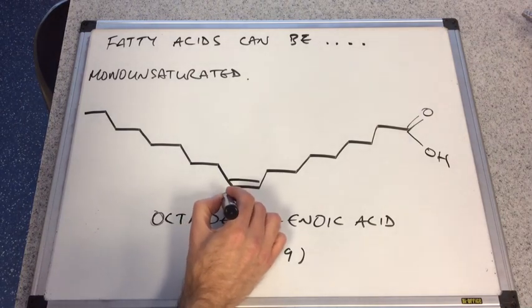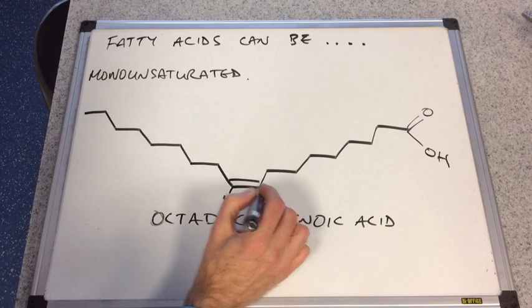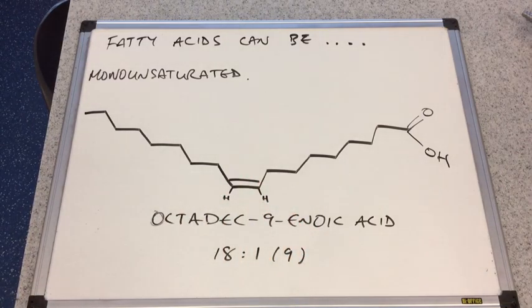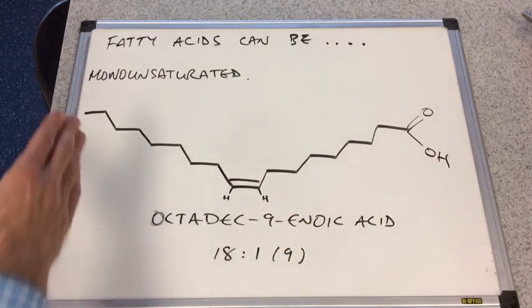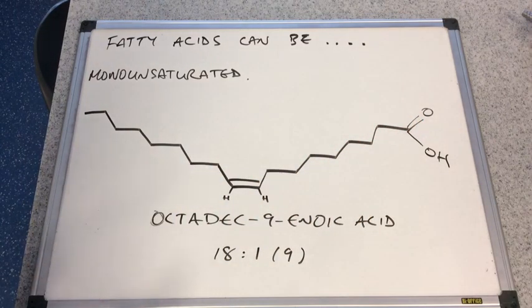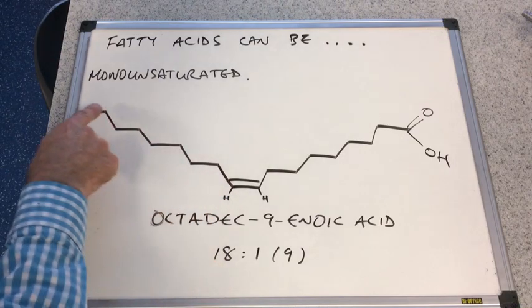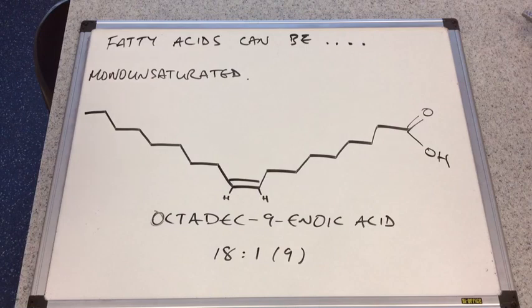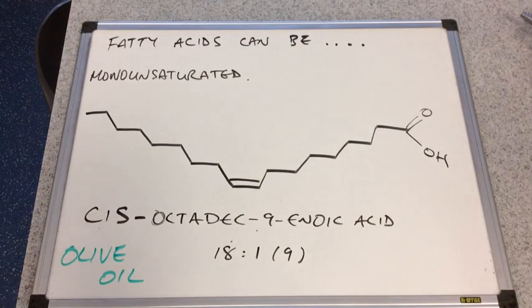Remember, this is a type of stereoisomerism. You could also refer to this as the Z form. But we're going to call this the cis form because cis trans isomerism can be used when you have a hydrogen and a non-hydrogen group on each of the carbons in the carbon-carbon double bond. And the only other thing I want to say about this fatty acid is that it occurs in olive oil. So you can derive octadec-9-enoic acid or oleic acid, it's also known as, from olive oil.